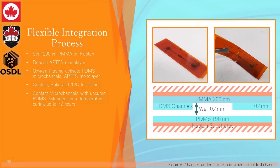One of the key challenges of integrating polydimethylsiloxane microchannels is binding them to PMMA. To address this challenge, we deposited an APTES monolayer on 200 nanometers of PMMA on Kapton, which we then oxygen plasma activated along with the microchannels. We put them in contact and baked them at 120 degrees for one hour, and then contacted the microchannels with more uncured PDMS on a second Kapton substrate with an extended room temperature curing of 72 hours. As you can see in the figure, this creates microchannels which effectively contain the fluid even under flexing.